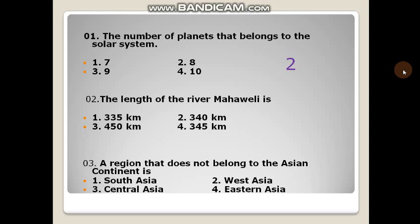Now we will see the answers. The number of planets that belong to the solar system is eight. Earlier it was nine, but Pluto was removed from the solar system as a planet and is now considered a dwarf planet. There are now eight planets in our solar system.